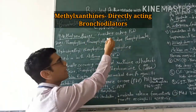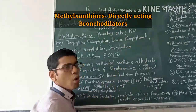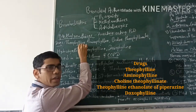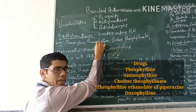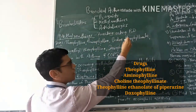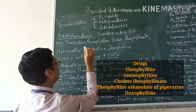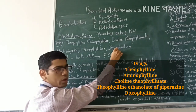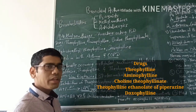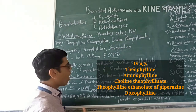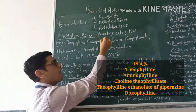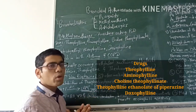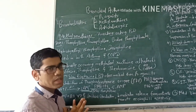Methylxanthines are directly acting bronchodilators. The drugs in this class are: theophylline, aminophylline, choline theophyllinate, hydroxyethyltheophylline, and doxophylline. There is another drug — theophylline ethylamide or piperazine. Out of these, theophylline and aminophylline along with doxophylline are the important and commonly used drugs from this class.